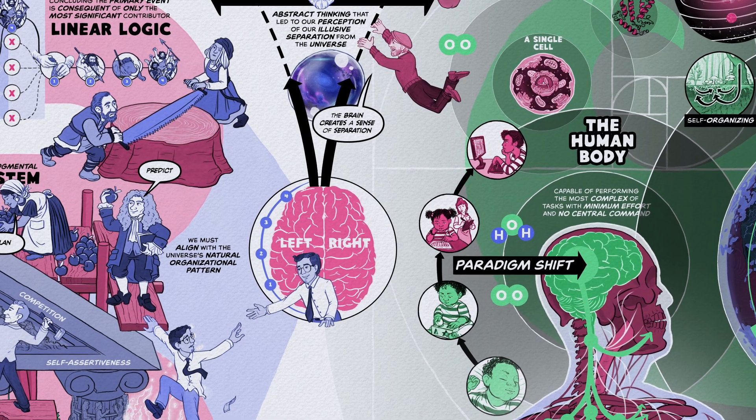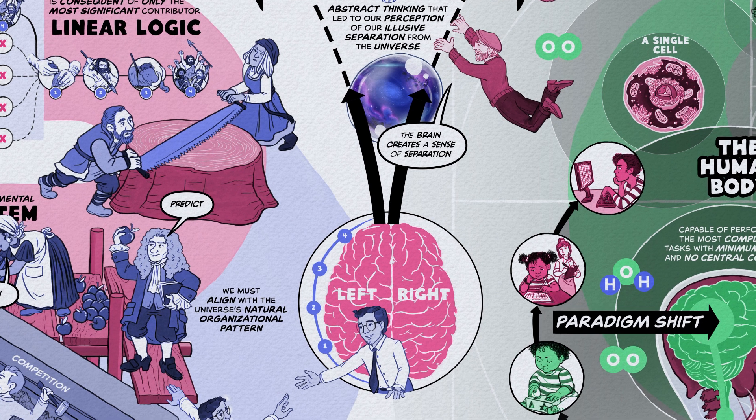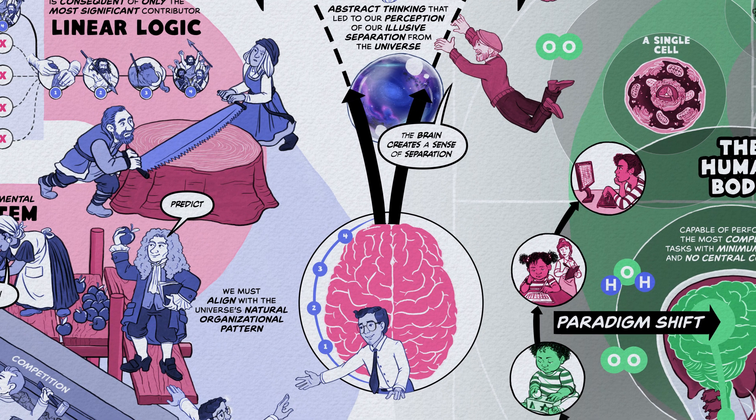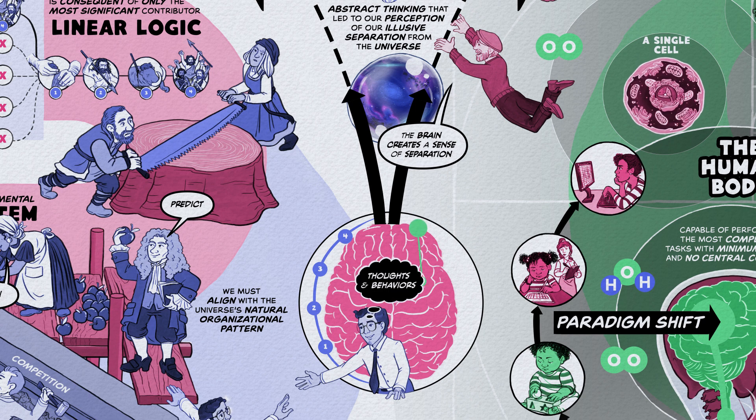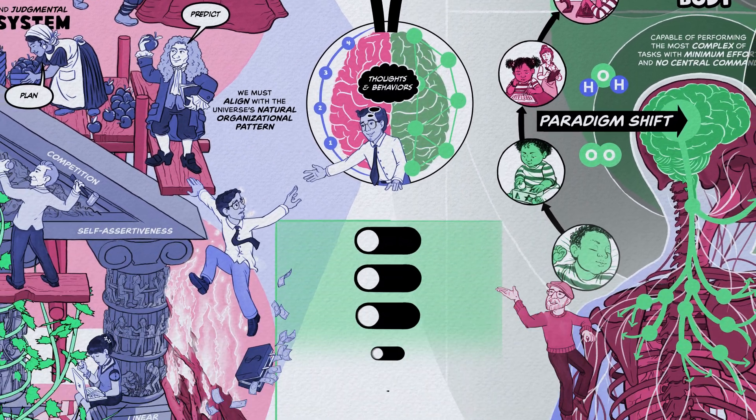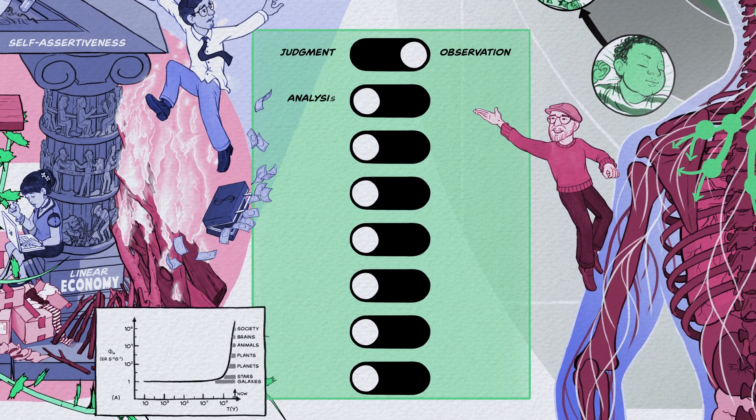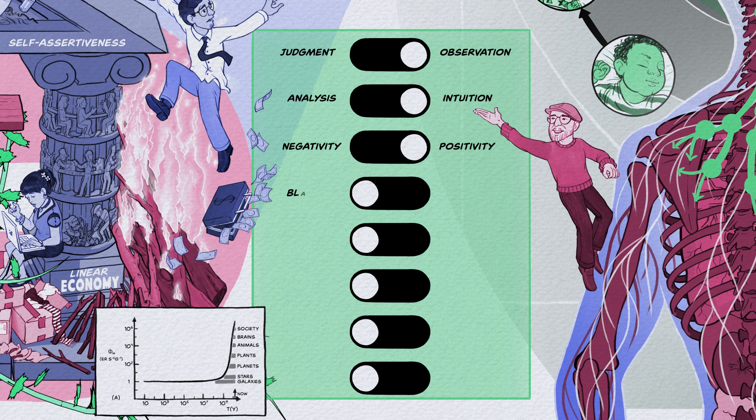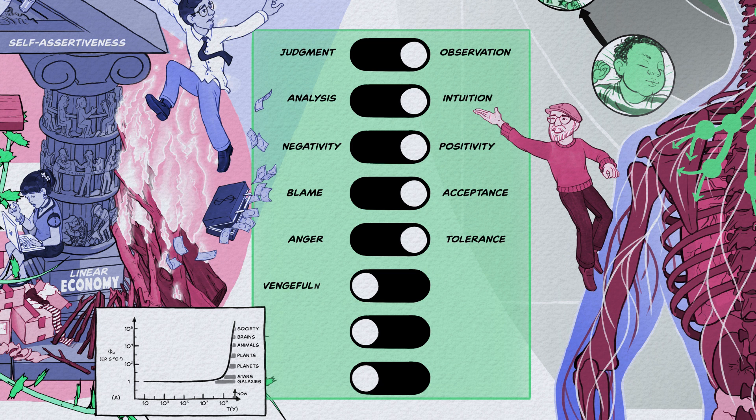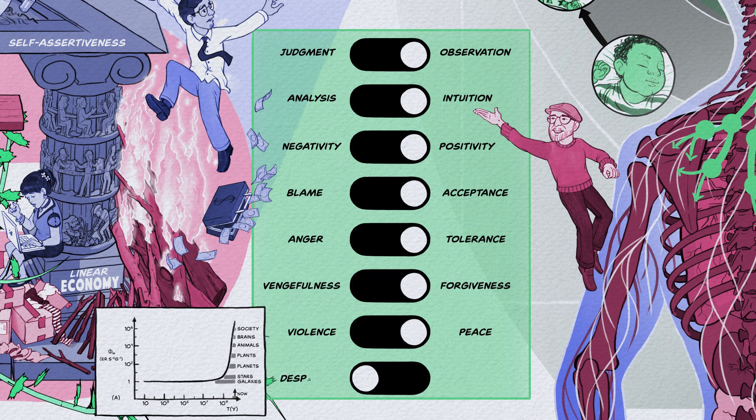The brain, a self-organizing system, can be trained to operate in a non-linear fashion by observing our thoughts and behaviors with non-linear values, transitioning our thinking from judgment to observation, analysis to intuition, negativity to positivity, blame to acceptance, anger to tolerance, vengefulness to forgiveness, violence to peace, and despair to hope.